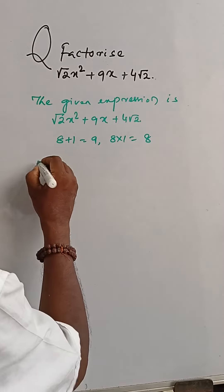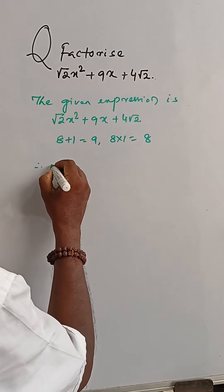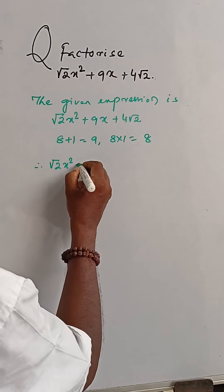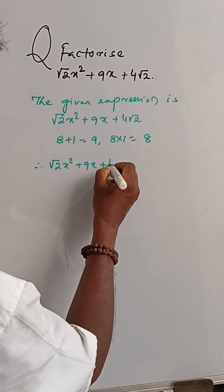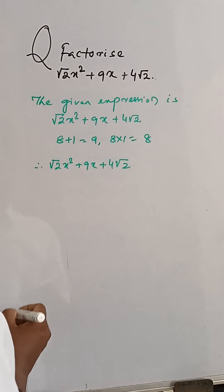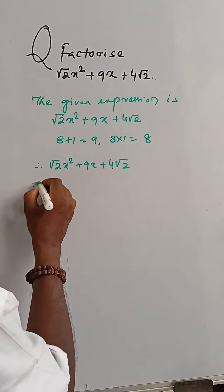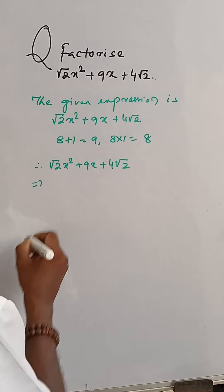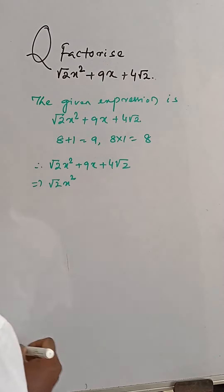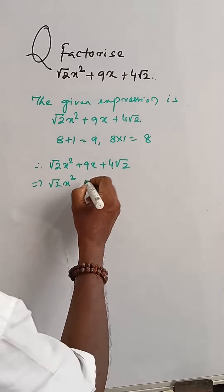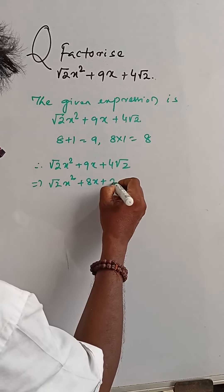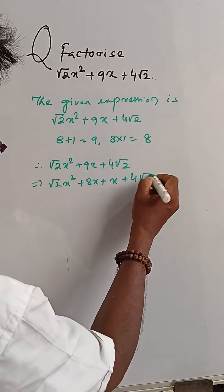So the expression √2·x² + 9x + 4√2 is equal to √2·x² + 8x + 1x + 4√2.